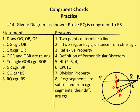So OG is congruent to OB. I'm going to say that OR is congruent to OR by the reflexive property — OR is congruent to itself. Then angles OGR and OBR are right angles, and I should note that they are congruent as well.